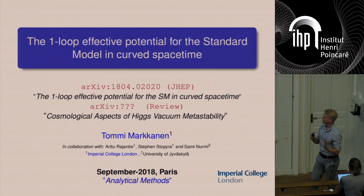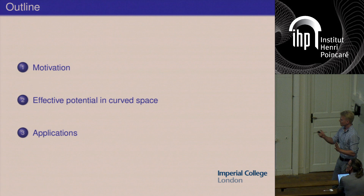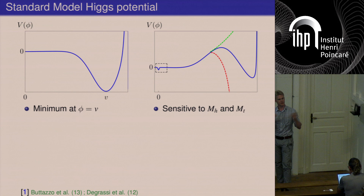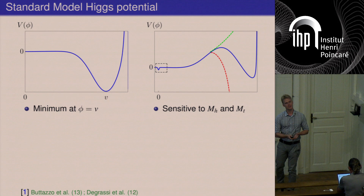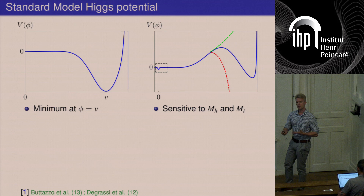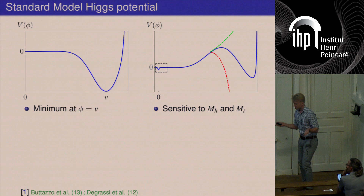So, first a bit of motivation. This is a schematic illustration of the potential of the standard model. The defining characteristic is that the Higgs field — the length of the Higgs doublet, which I denote φ — has a vacuum expectation value away from zero. This is crucial for giving masses to gauge bosons without violating gauge invariance.